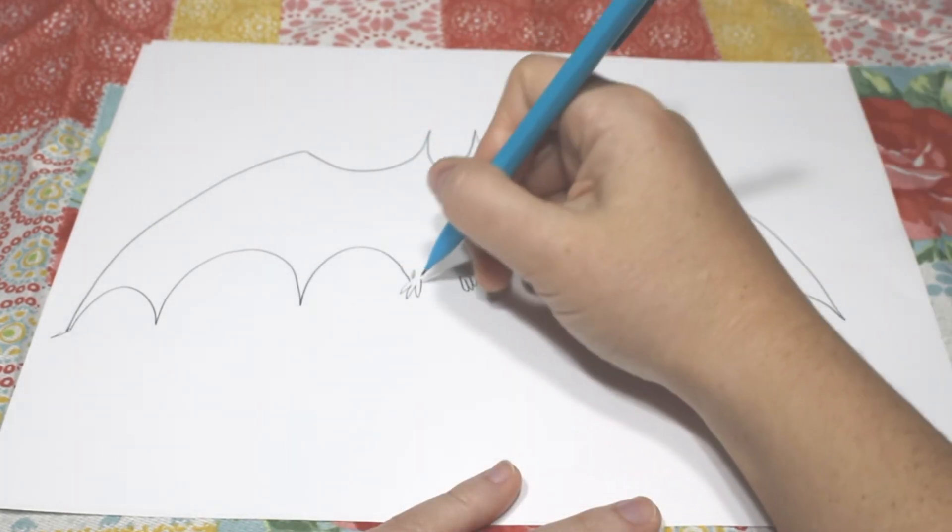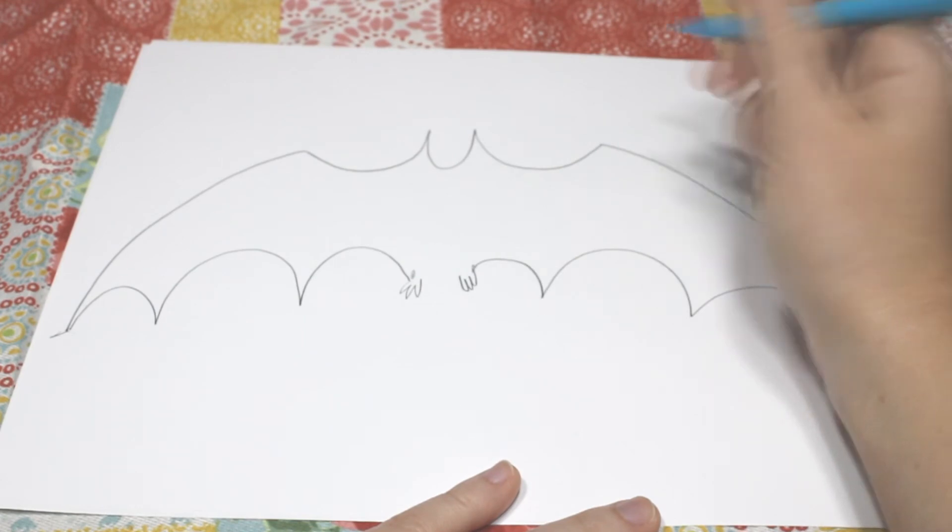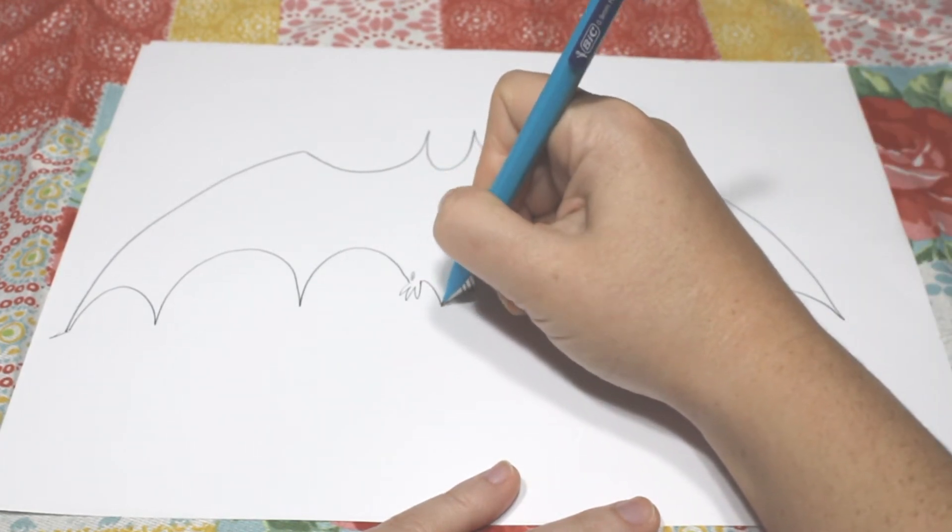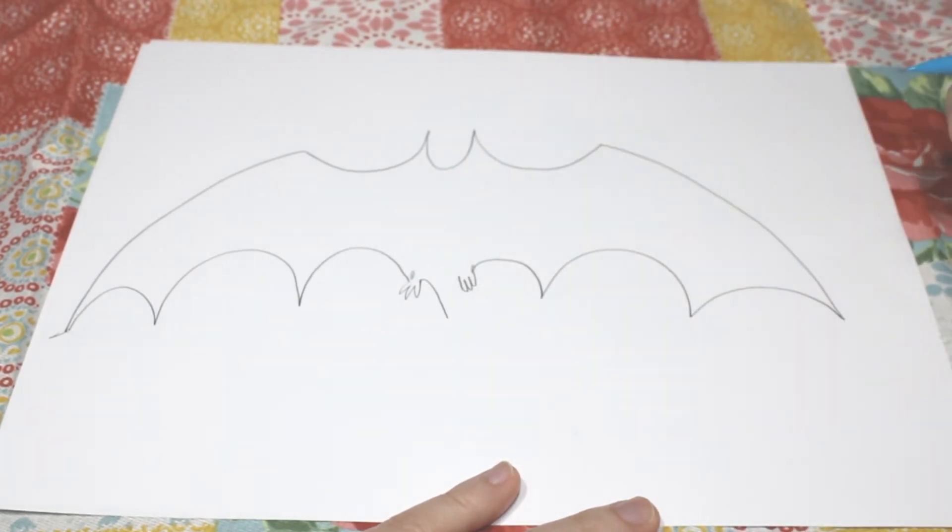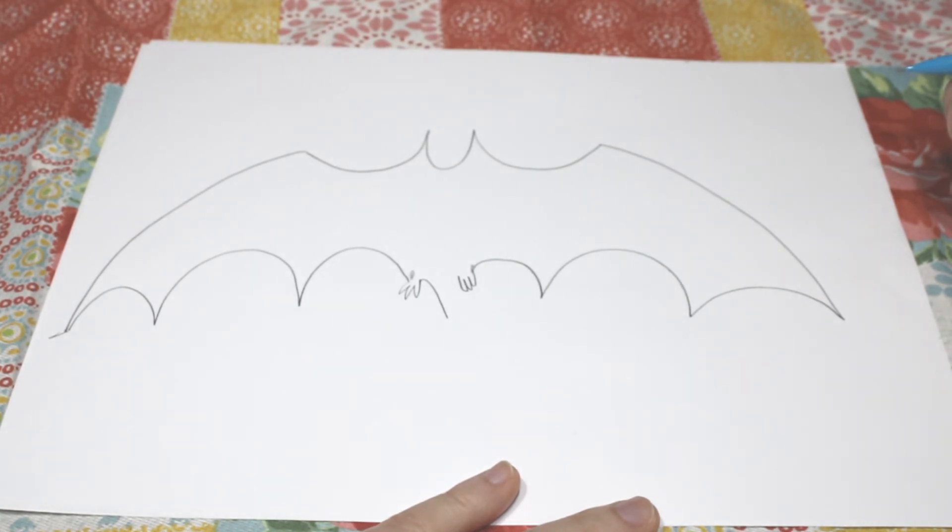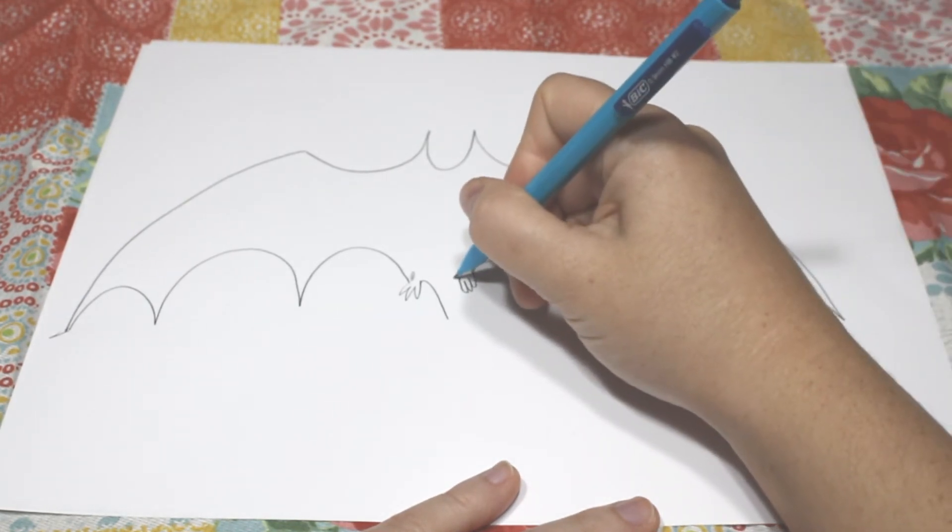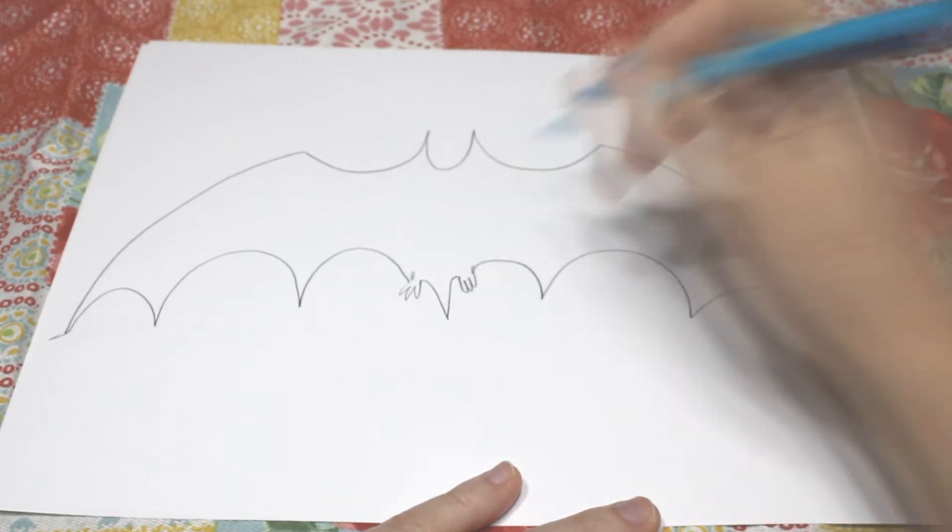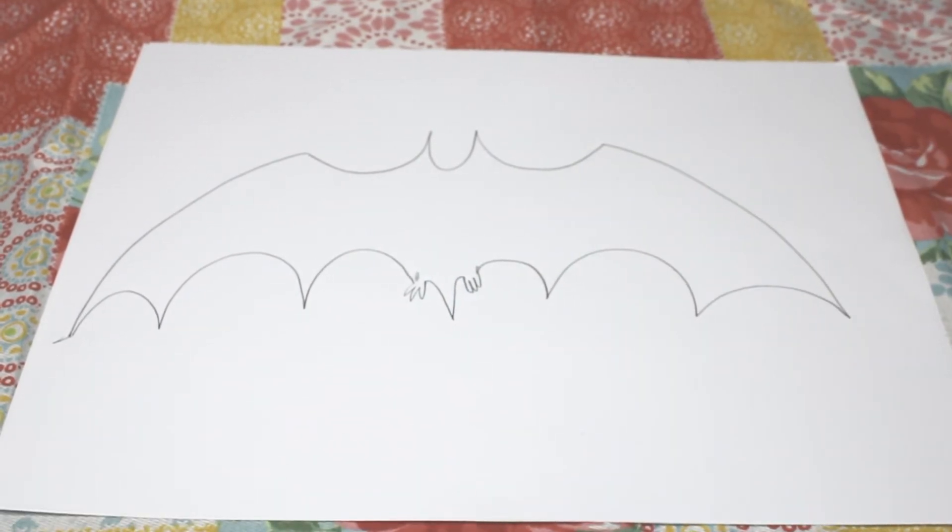Now, sometimes bats will have little tails coming to their wings to help them fly, so we're going to go down from here, and then same thing for that foot. Go down until you make a V. His little tail.